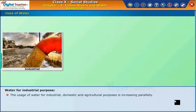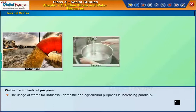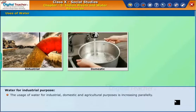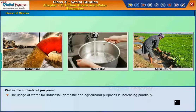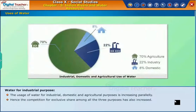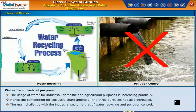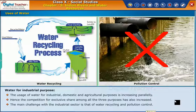The uses of water for industrial, domestic and agricultural purposes is increasing in parallel. Hence, the competition for an exclusive share among all the three purposes has also increased. The main challenge with the industrial sector is that of water recycling and pollution control.